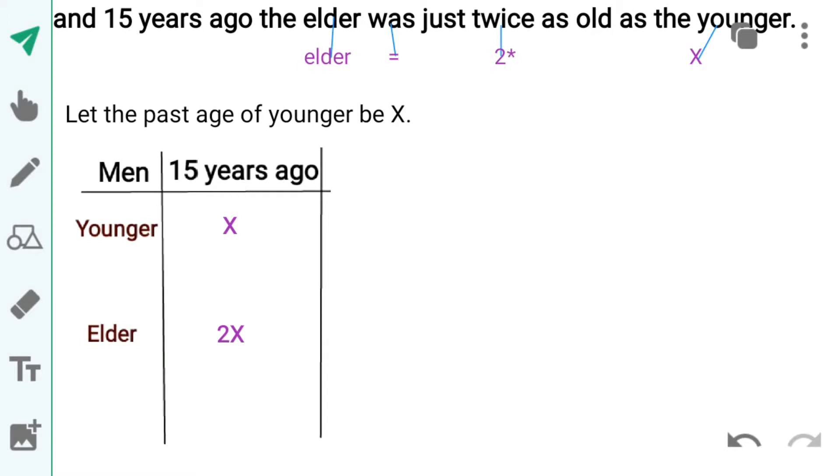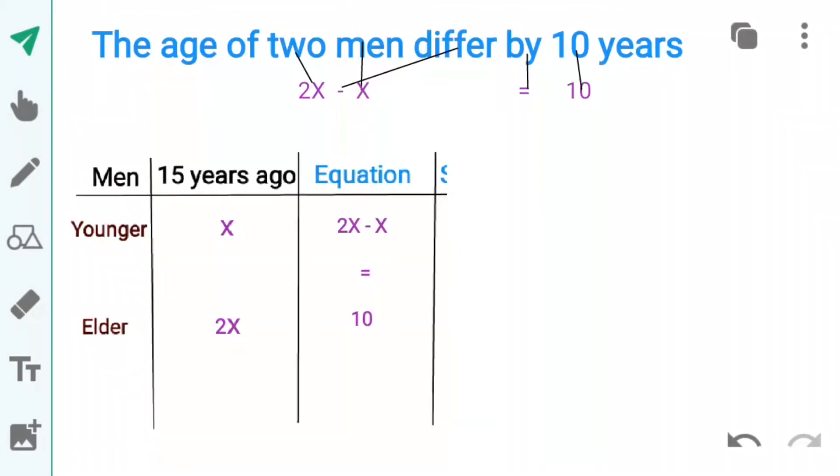Ab elder ki age ka expression banayenge. Mainne pehle elder as it is likh liya hai. Was means equals to. Twice means 2 into. Kis se younger ki age se jo hai x. Ab isse mainne 15 years ago box mein likh liya hai.